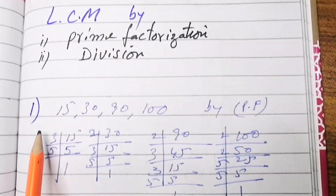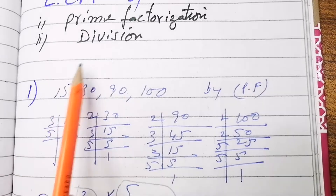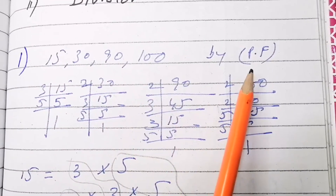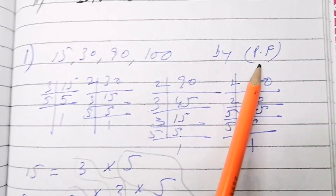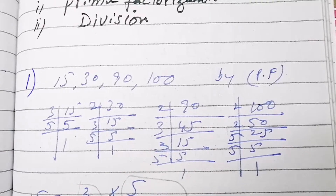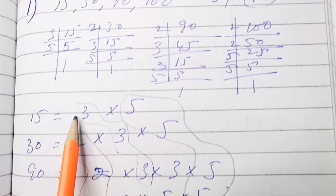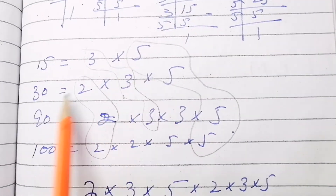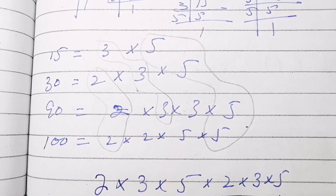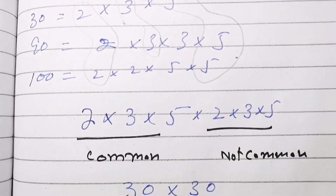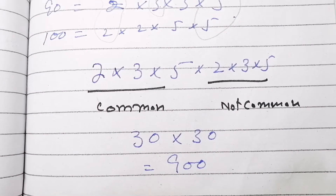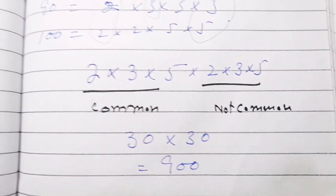Exercise 7, question number 1: the numbers 15, 30, 90, and 100 are given. By prime factorization method, we take the factors separately and write them in sequence. Then we take the common factors and write the non-common factors as well. We multiply all of them together. The answer for LCM by prime factorization method is 900.